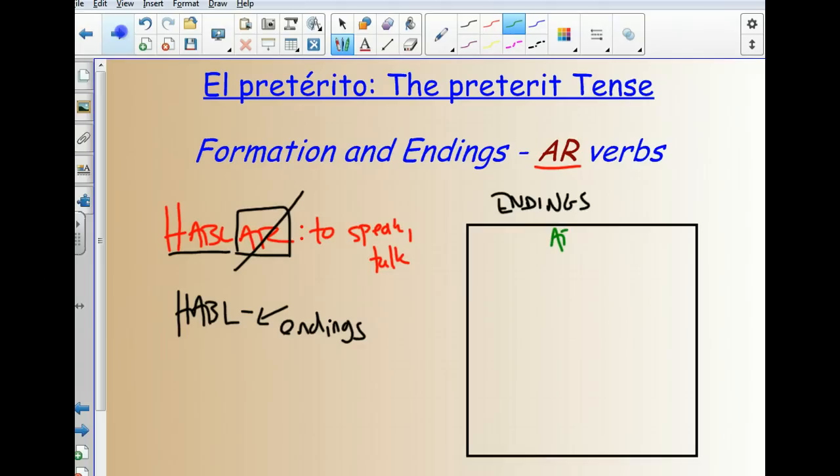Remember, we're talking here, any verb that ends in an AR in Spanish and that is regular. We'll talk about irregulars later. The YO form is E. The TU form, ASTE. El/ella/usted, O. Nosotros, AMOS. Vosotros, ASTEIS. Ellos, ellas, ustedes, ARON.